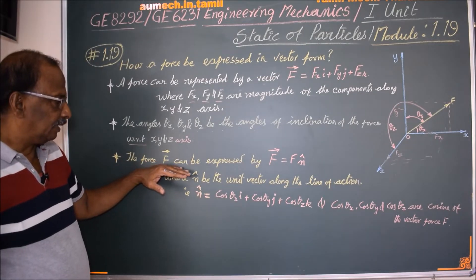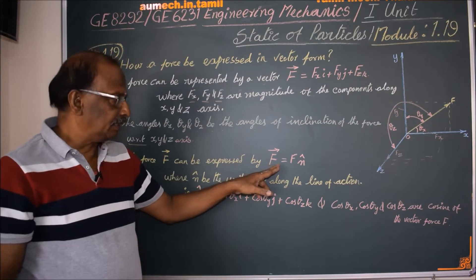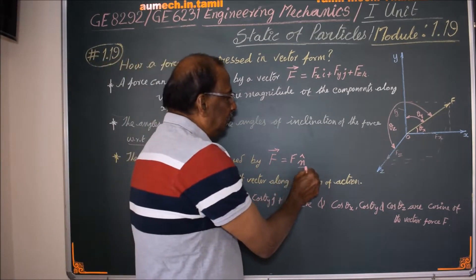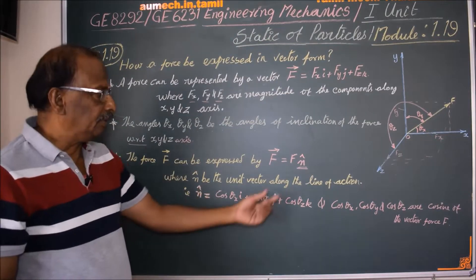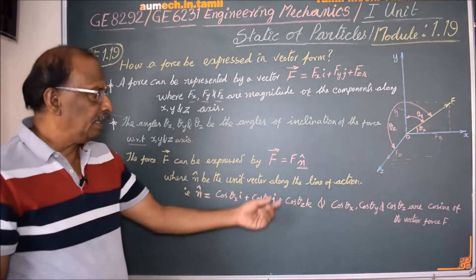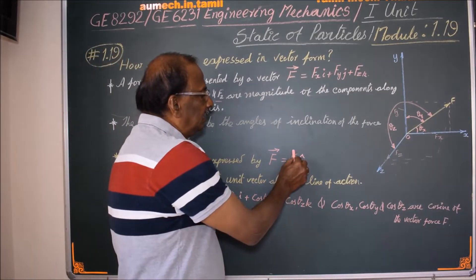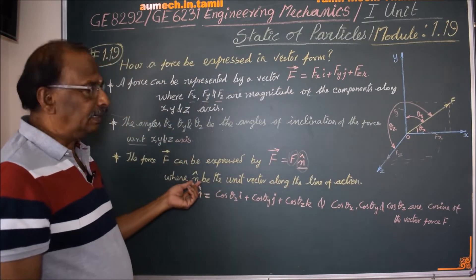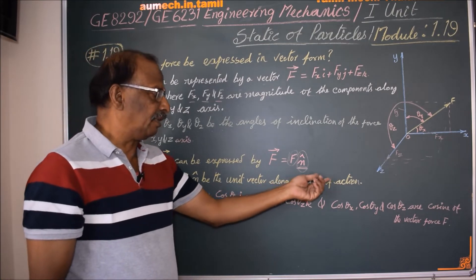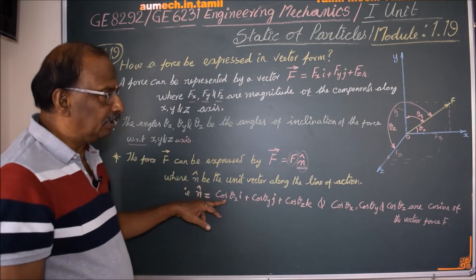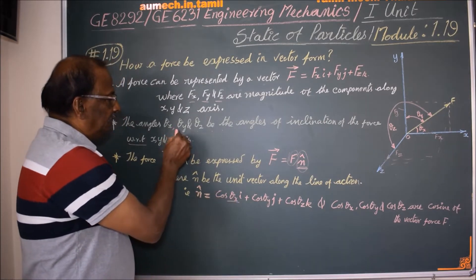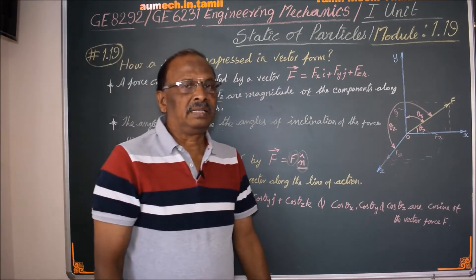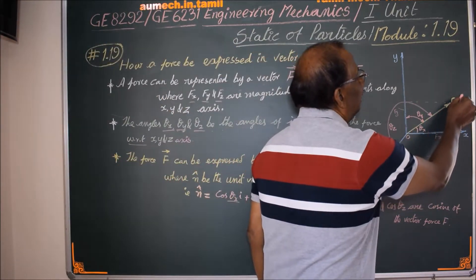The force vector F can be expressed as F equal to F into n-cap, where n-cap is the unit vector. F is the magnitude and direction. n-cap is the unit vector along the line of action. The direction is denoted by the angle the force makes with the axes.